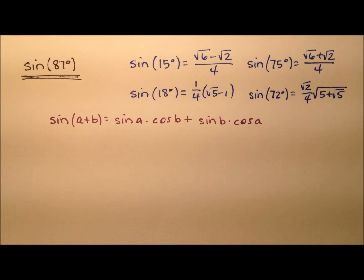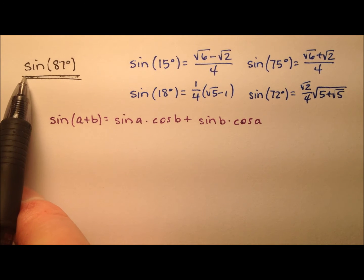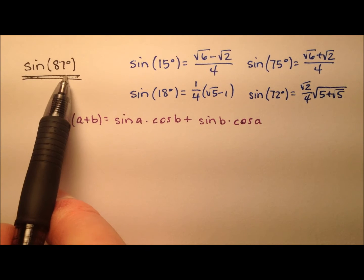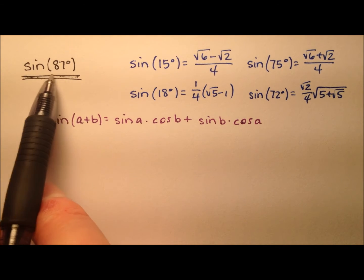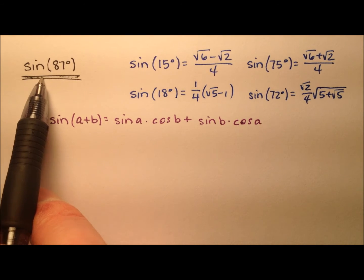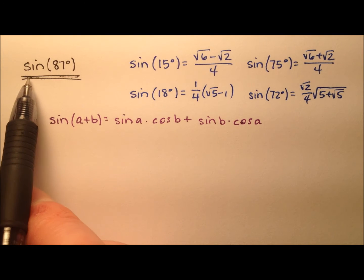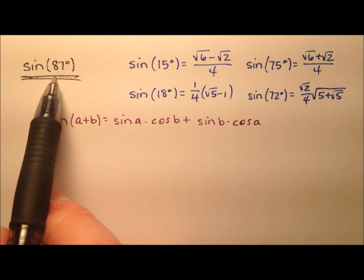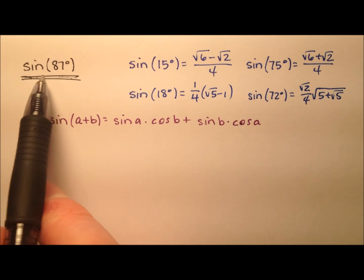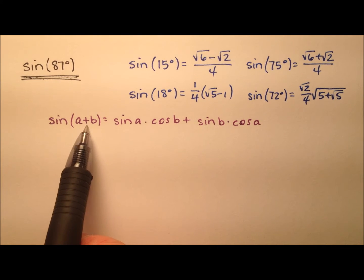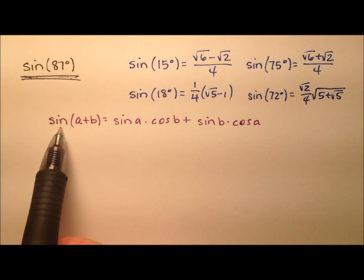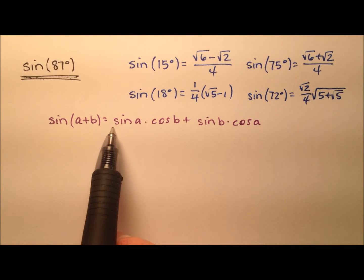In this video, I'm going to continue my series on the exact value for trig functions. We have the sine of 87 degrees that we're going to take a look at, and we're going to find this exact value by using the sum angle identity for sine.